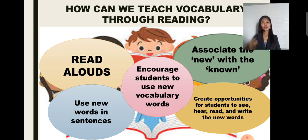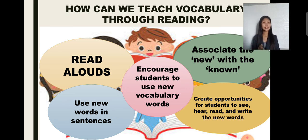Teaching students how to decode words is important in early literacy instruction, but it is not enough. They also need to receive explicit instruction in fluency, comprehension, and of course in vocabulary to become proficient readers. Vocabulary instruction has a powerful effect on all components of proficient reading, because when vocabulary increases, learning also increases. That's all for today. Thank you.